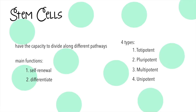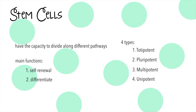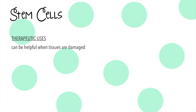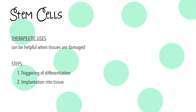Stem cells can diagnose and treat many diseases, and there are different ways of treating diseases depending on the type. Basically, you chemically trigger the stem cell to differentiate into the cell you want, then you implant it into your tissue, typically by injecting a needle.